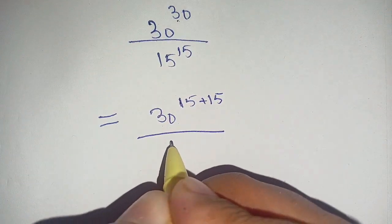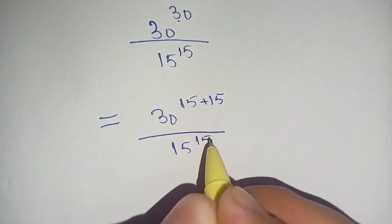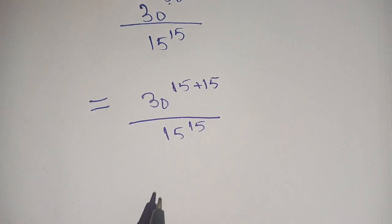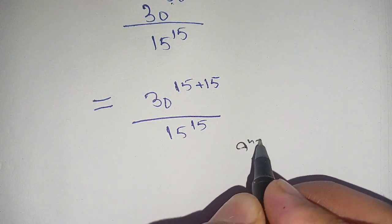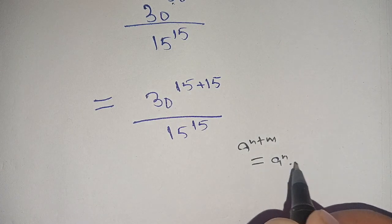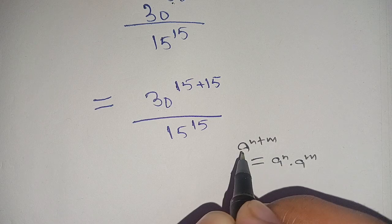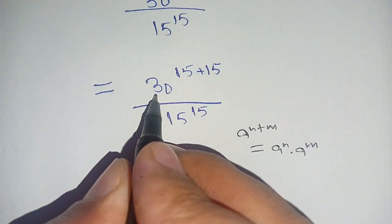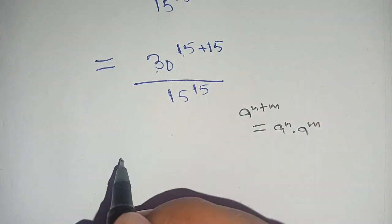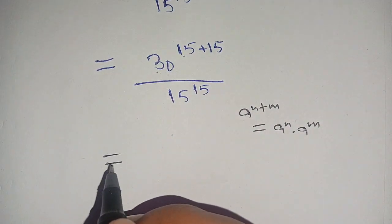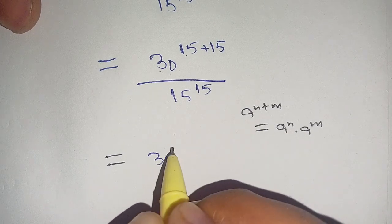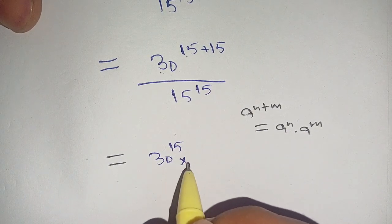Divided by 15 power 15. Now in the next step we can use this identity: a power (n plus m) is equal to a power n times a power m. Here a is equal to 30, n is equal to 15, and m is equal to 15.